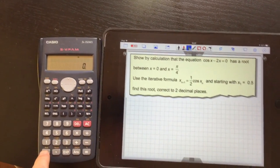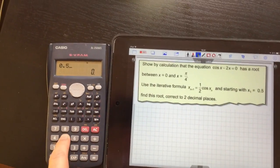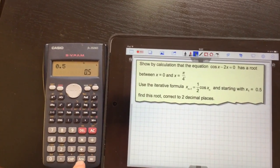And then we put in the starting value, which in this case is 0.5, press equal, and press answer.